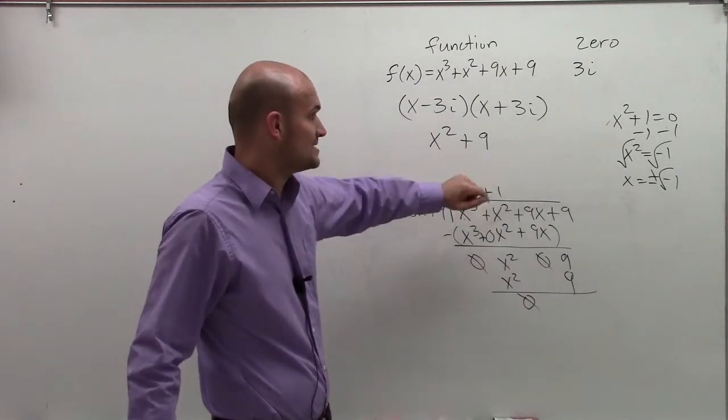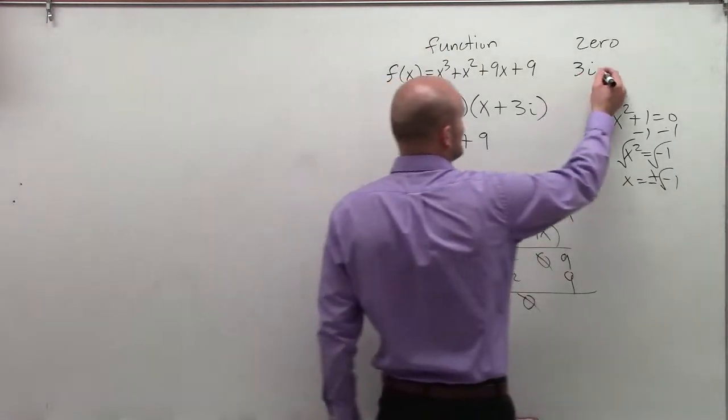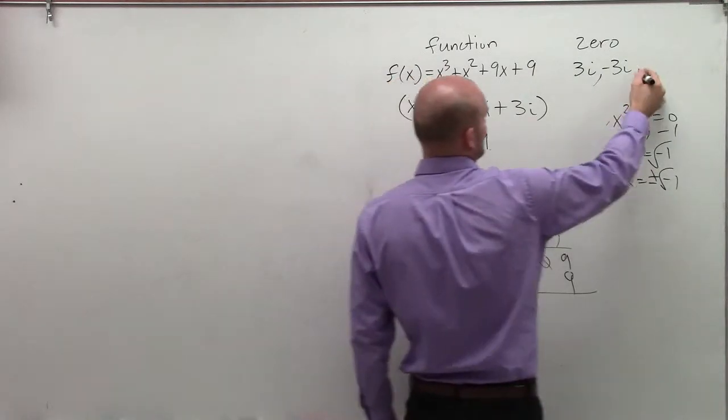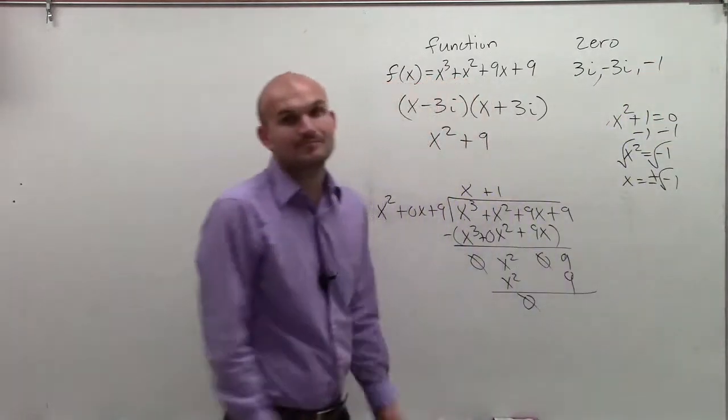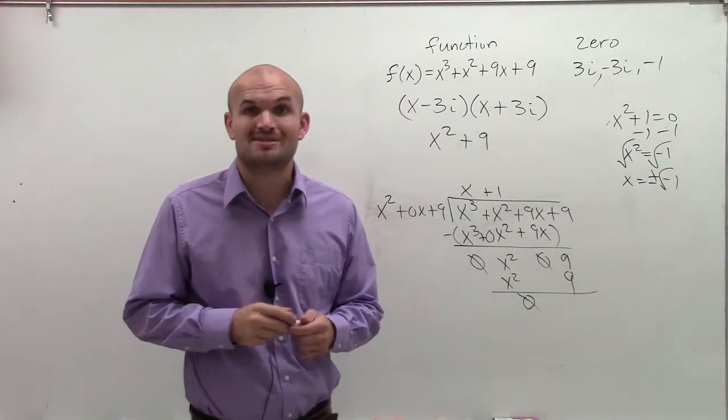So therefore, my zeros are pretty easy. If I know my zero 1 is 3i, I know that x1 is 3i, x2 is negative 3i. And then x plus 1 equals 0, solve for x equals negative 1. So there you go, ladies and gentlemen. That's how you find the zeros when given one complex zero. Thanks.